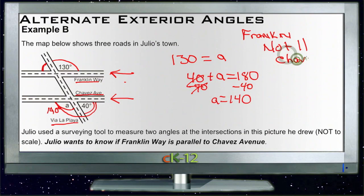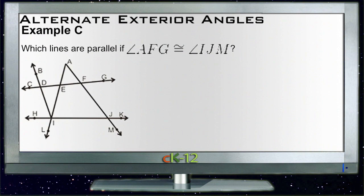Alright, let's take a look at Example C. Example C says which lines are parallel if angle AFG is congruent to angle IJM. Well, if those two angles are congruent, then that tells us that the upper right-hand angle and the lower left-hand angle of two lines CG and HK crossed by a transversal are equal.